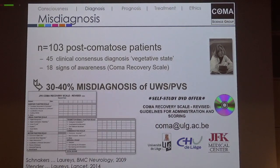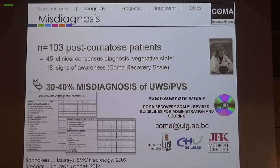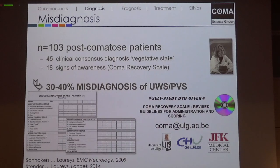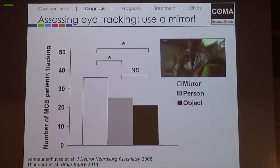It starts with getting the diagnosis right, and this is tricky. Studies have repeatedly shown that vegetative state — unresponsive wakefulness — is a difficult diagnosis, and in about one third of cases we think there's nothing going on in the mind of these patients, and yet there can be signs of consciousness that can already be seen if we use the appropriate scale. The Glasgow Coma Scale is not going to help here; we need the Coma Recovery Scale, though it's very hard to use in intensive care.